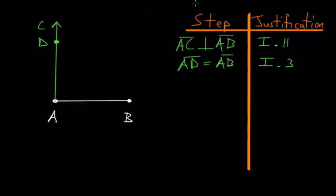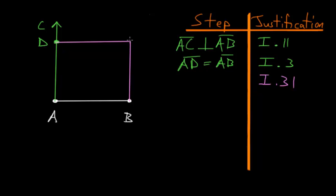Now we use Book 1, Proposition 31 to construct a line parallel to AB through point D. We also use the same proposition to construct a line parallel to AD through point B. We label where these two lines meet as point E. So we drew DE parallel to AB, then BE parallel to AD.